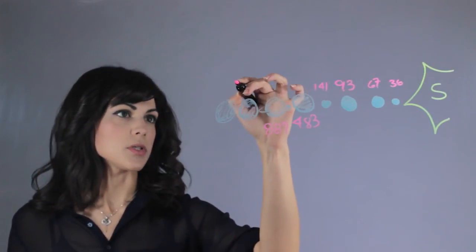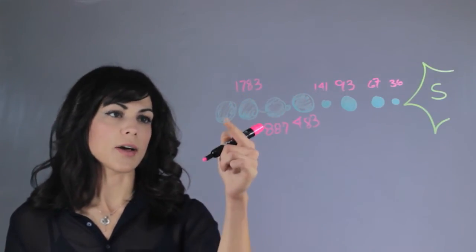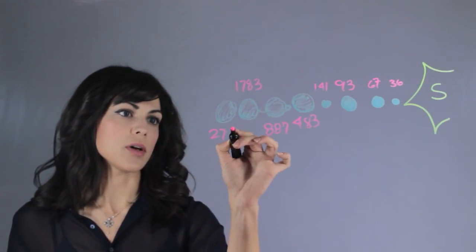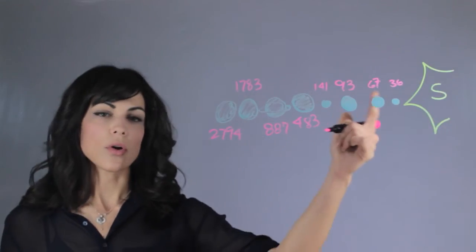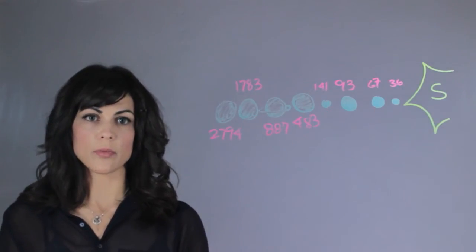Then we have Uranus which is 1783, and finally Neptune which is 2794. These are all in the scale of millions of miles.